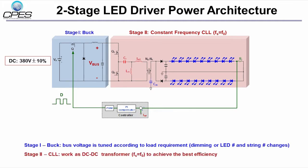For CLL, it is unregulated and always working around the resonant frequency point to achieve best efficiency. As the dimming signal changes or the LED number changes, the bus voltage will be adjusted accordingly.